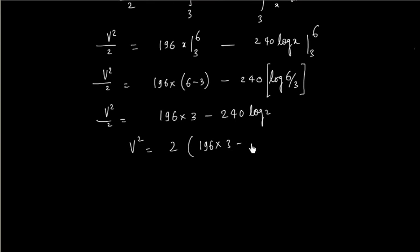So v square is equal to 196 into 3 minus 240. And this is natural logarithm, that is not log base 10, so let us write ln 2. So let us calculate this value.